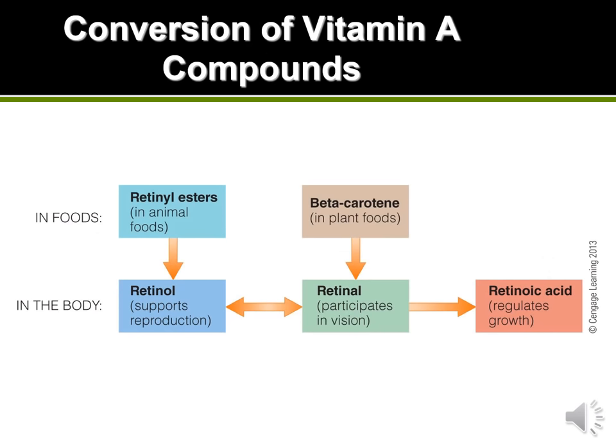We also have different roles depending on the type of vitamin A, and different sources. The three retinol esters can be found in animal foods, but beta-carotene can only be found in plant foods. Beta-carotene is what gives that orange pigment, so it's going to be found in things like carrots, squash, and pumpkin. Those foods are rich in beta-carotene and when they enter the body they can convert to the other forms of vitamin A.